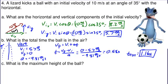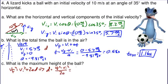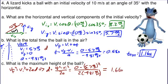Finally, find the maximum height of the ball — another vertical problem, this time solving for displacement. We already know vi, vf, a, and t, so let's use vf squared equals vi squared plus 2ad. Therefore d equals vf squared minus vi squared over 2a: zero minus 5.7 meters per second squared over 2 times negative 9.81 meters per second squared. Plugging that into the calculator gives a displacement of 1.66 meters, which is the maximum height the ball reached. Thanks and good luck.